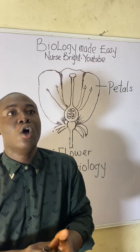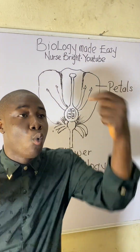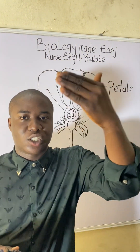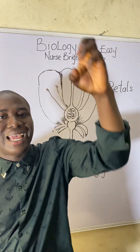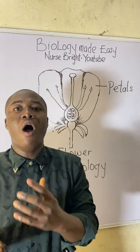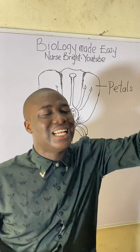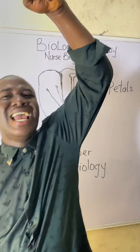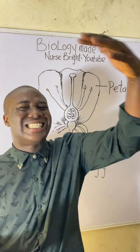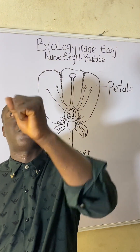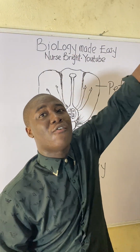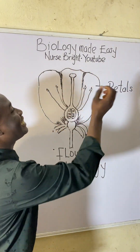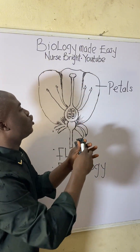Flowers can be grouped based on what pollinates them. Pollination is the process of transfer of pollen grain from the anther of a plant to the stigma of that same plant or another plant. We have two types: self-pollination, where pollen moves from the anther to the stigma of the same plant, and cross-pollination, where pollen moves to the stigma of another plant.